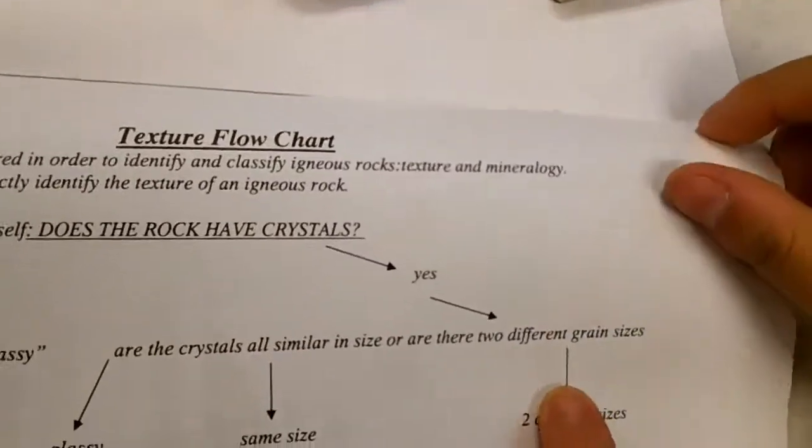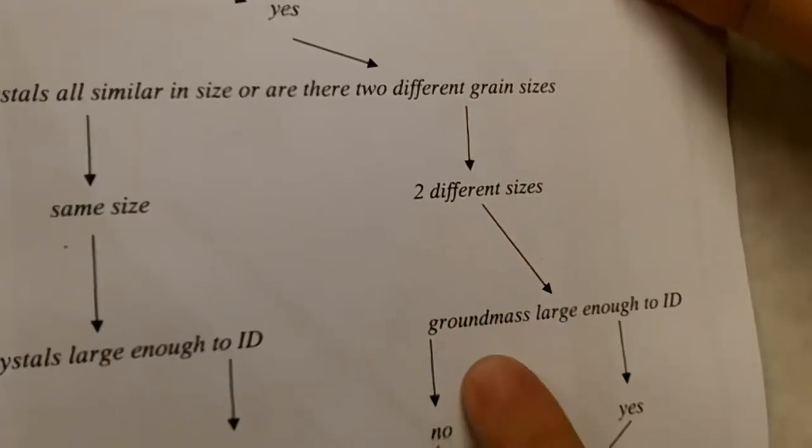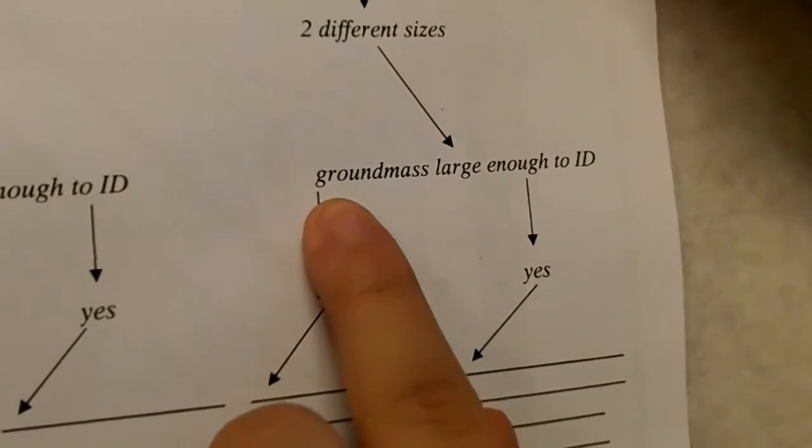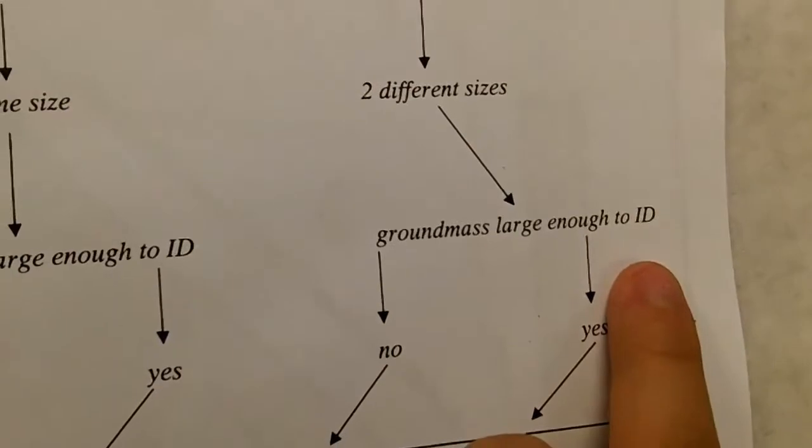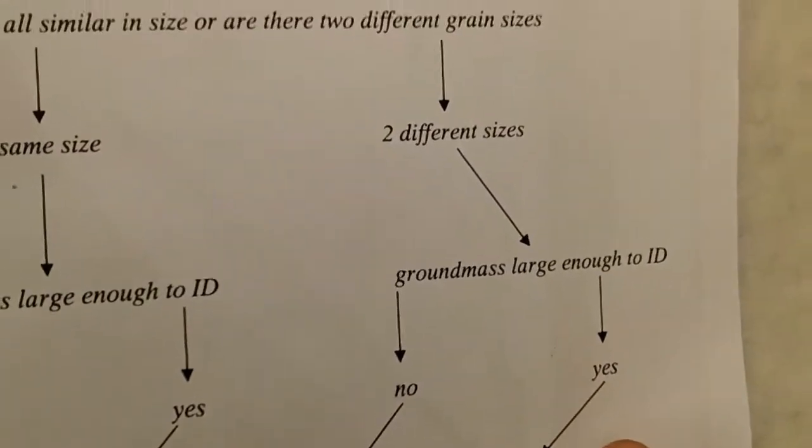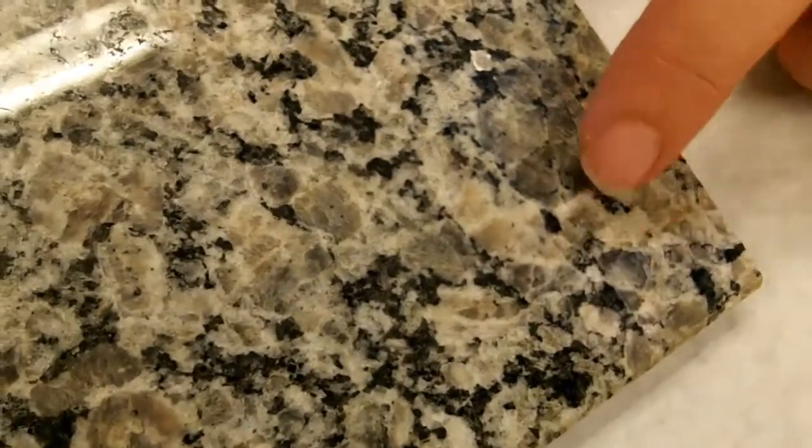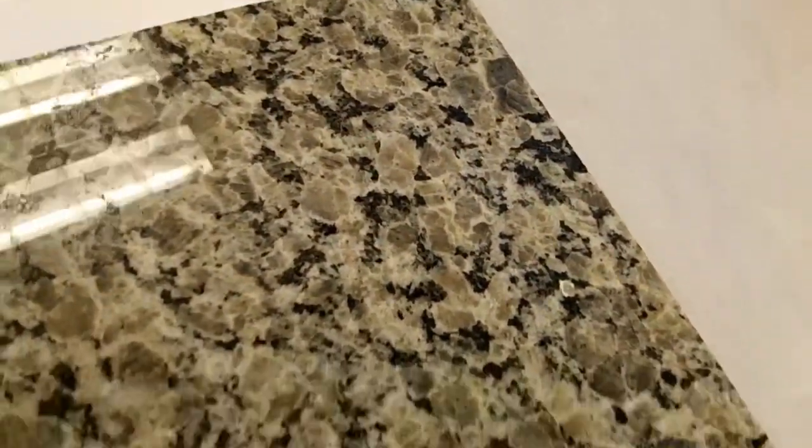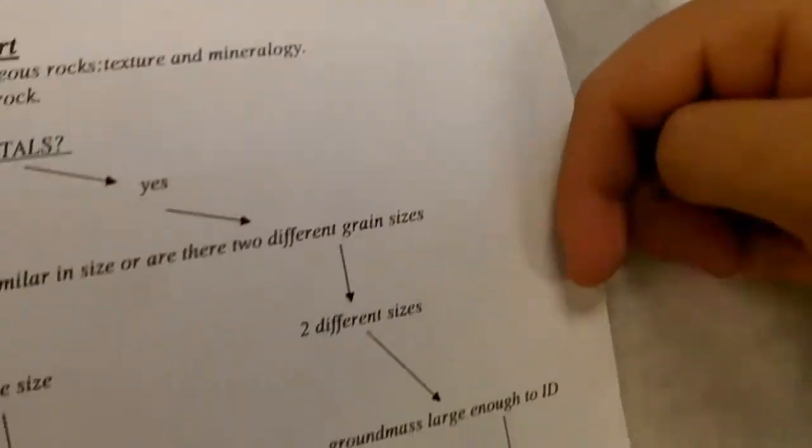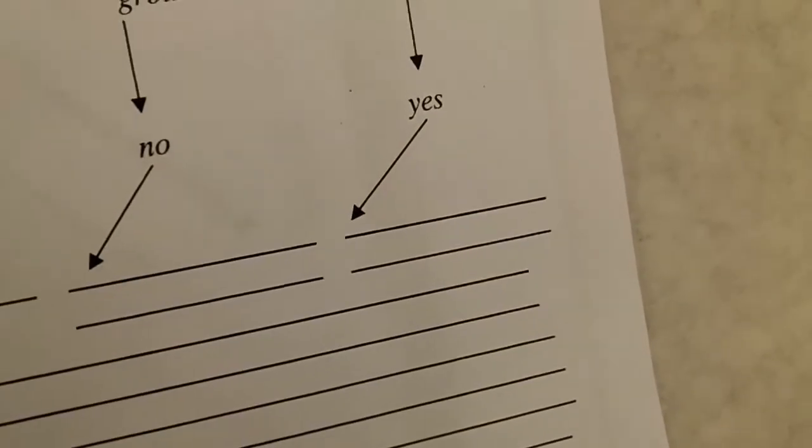Where do we go next? Two different sizes. Yep. Ground mass large enough to identify. So is it large enough to identify? So we're talking now about the black crystals, the white crystals, the ones that are surrounding the larger gray crystals. Are they big enough to see? Yeah. I think so too. All right. So this one would be a texture that we're going to call porphyritic and baneritic.